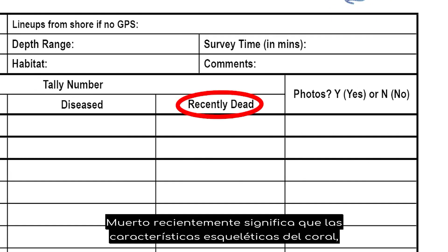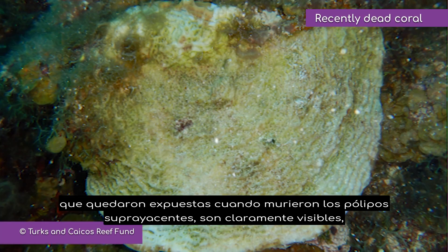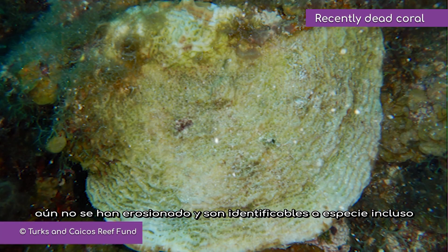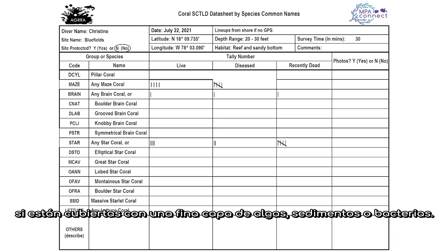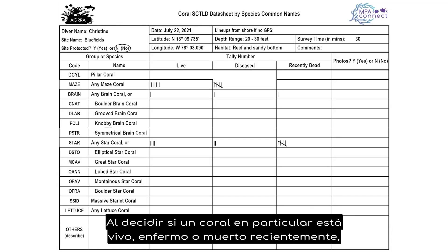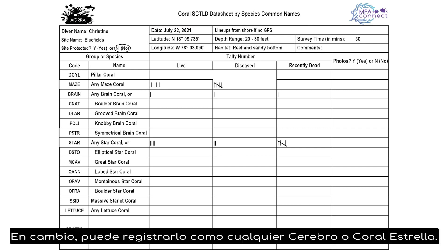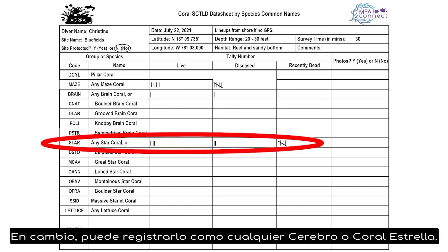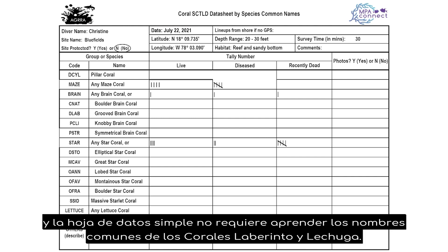Recently dead means that the coral's skeletal features, which were exposed when the overlying polyps died, are clearly visible, haven't yet been eroded, and are identifiable to species, even if covered with a thin layer of algae, sediment, or bacteria. When deciding whether a coral is live, diseased, or recently dead, don't worry if you're not sure about the common name of one of the brain or star coral species — you can record it as 'any brain' or 'any star coral.' Pillar corals and massive starlet corals should be easy to unambiguously recognize at most sites.